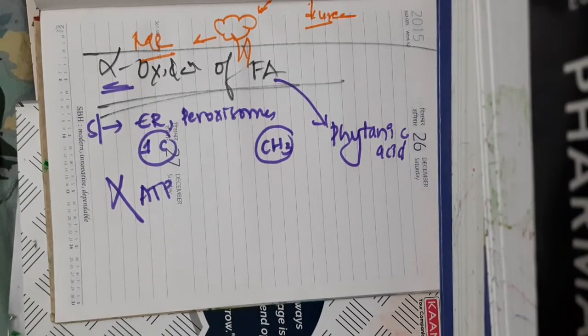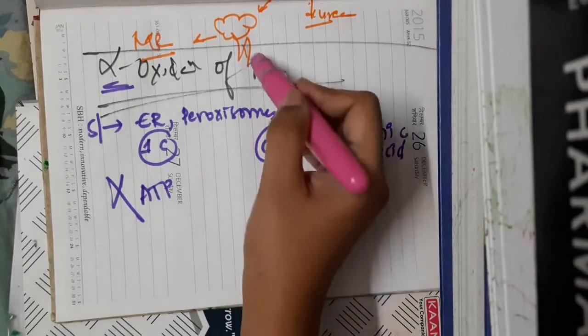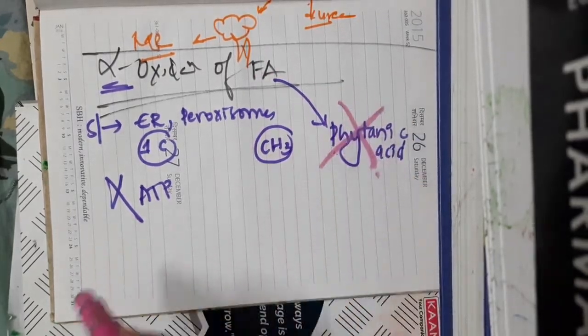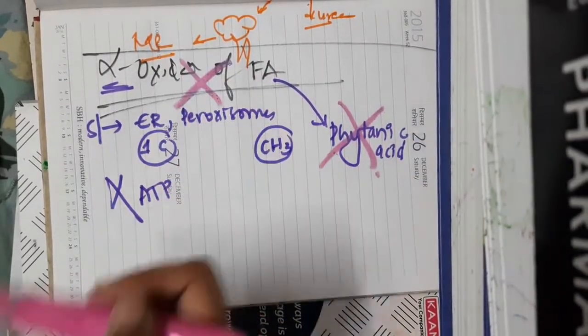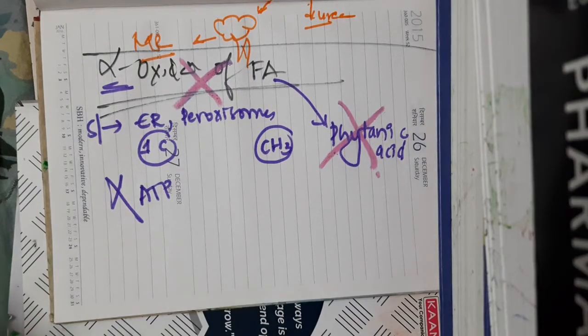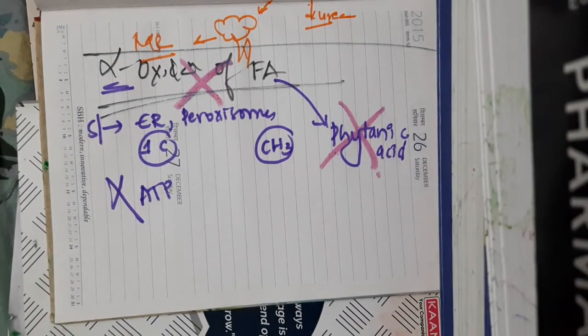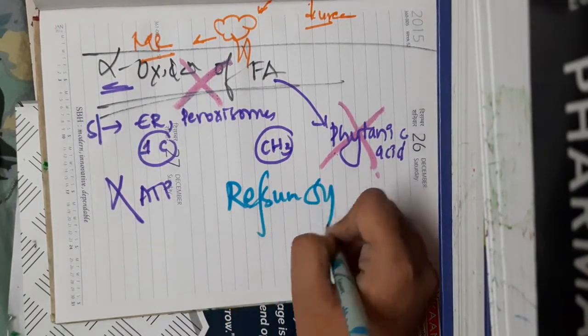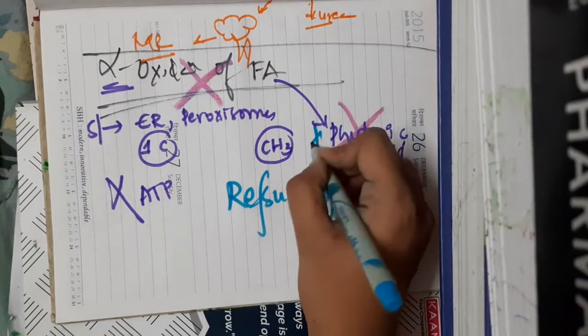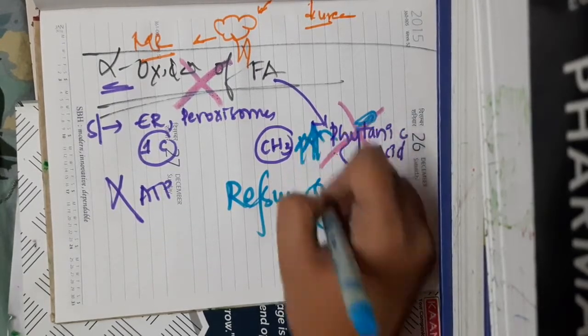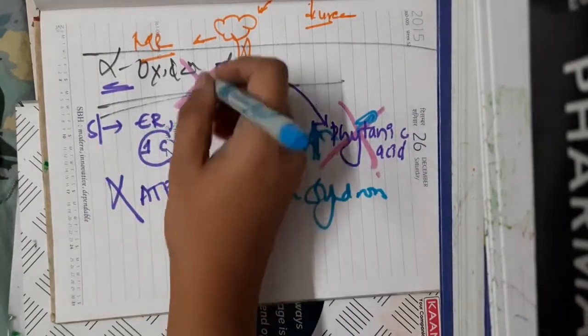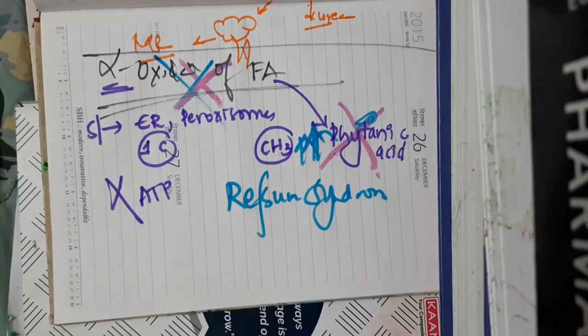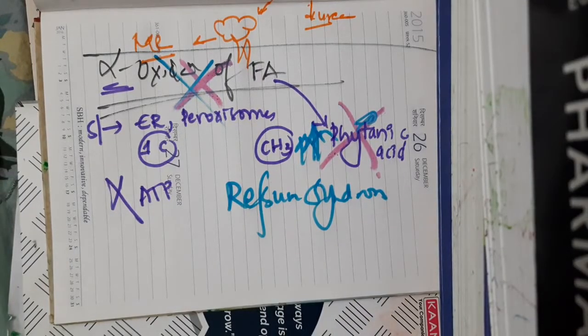Whenever there is defect in the alpha oxidation of fatty acid, especially phytanic acid defect, this will lead to increased phytanic acid, which causes a syndrome called refsum syndrome. In refsum syndrome, there is increased phytanic acid because of problem in alpha oxidation of fatty acid.